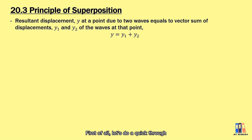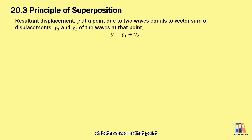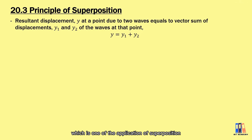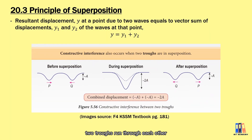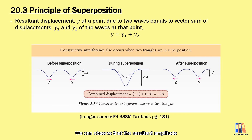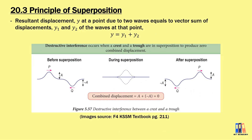First of all, let's do a quick review on the principle of superposition. When two waves are on top of each other, the resulting displacement at that point is equal to the vector sum of the displacements of both waves. In SPM, we learned about wave interference, which is one application of superposition. There are two types: constructive superposition, which happens when two crests or two troughs meet — the resulting amplitude is higher — and destructive superposition, which happens between a crest and a trough, giving a lower resulting amplitude.